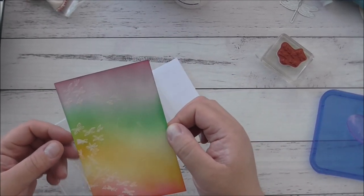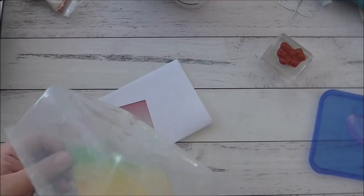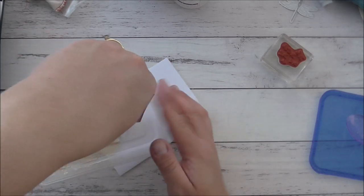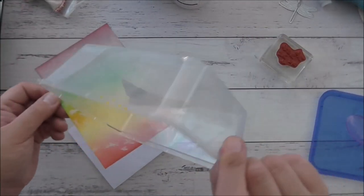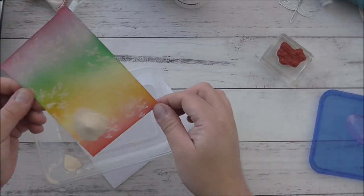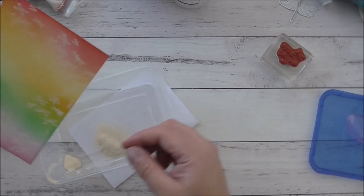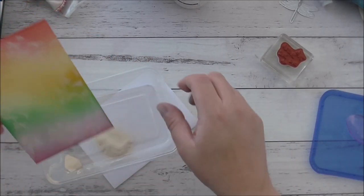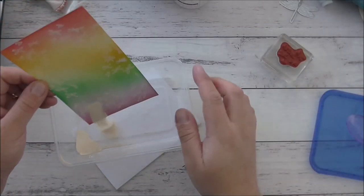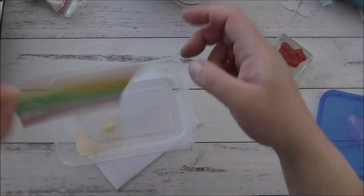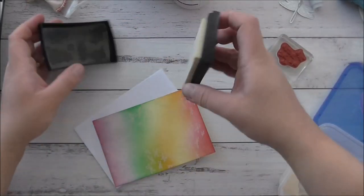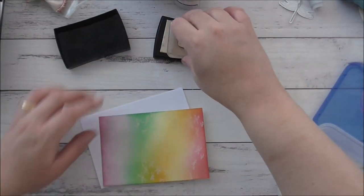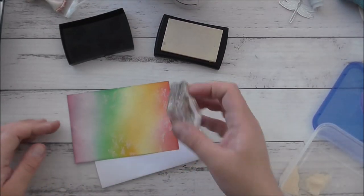Doesn't that look gorgeous already, I love that. Let's see how this turns out. And wherever I didn't stamp properly I'm going to just stamp a few more of those dragonflies, so I'll just grab my Versamark again and I'll just stamp where it looks like it's kind of missing. So I'll stamp here.